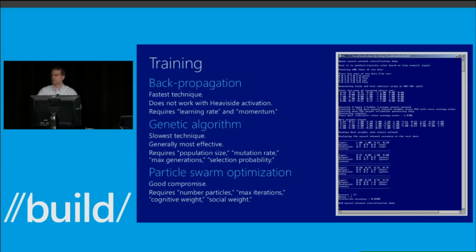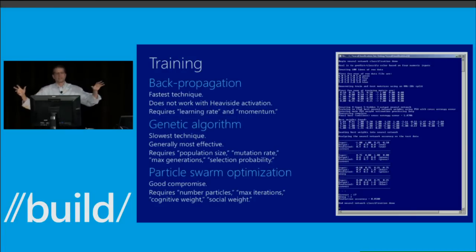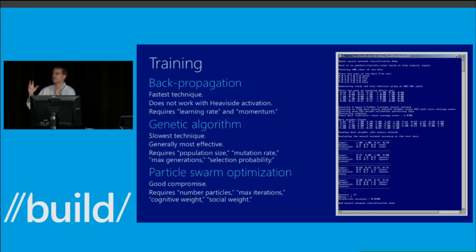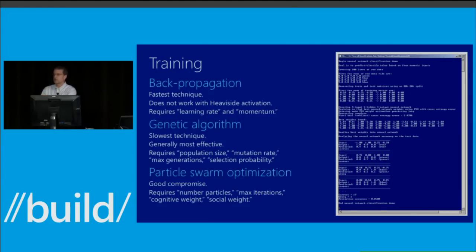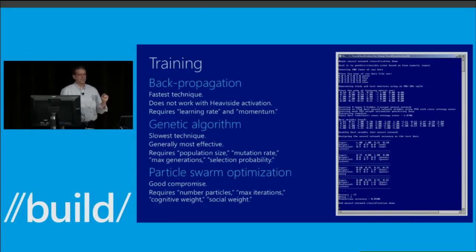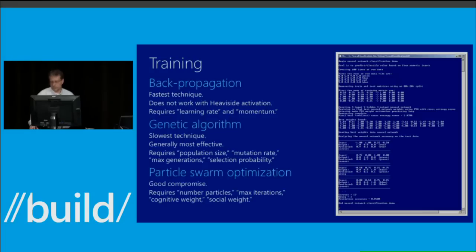Particle swarm optimization is a completely different approach based on the grouping behavior of flocks of birds and schools of fish. Research suggests it is stunningly effective for training neural networks and very unexplored. There's also a third technique called genetic algorithms, which seem to have fallen out of favor. All three require free parameters — values you have to guess and determine through trial and error. Backpropagation is especially ultra-sensitive to your choice of free parameter values.